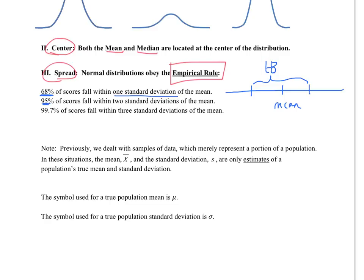95% of the scores are within two standard deviations of the mean. So if I were to go out one more standard deviation in each direction, all of these scores would be 95% of my data. And then lastly, 99.7% of the scores fall within three standard deviations. So if I were to go out one standard deviation further, all of these scores would fit into that 99.7%.